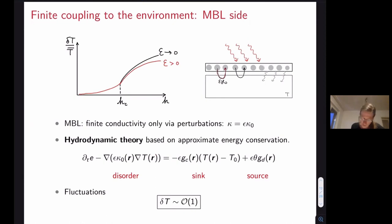To properly capture the MBL side, one would really have to take into account all conservation laws. But if we cheat a little bit and just say that, okay, in this case the conductivities that the system has are only due to the coupling to the environment and are thus proportional to the coupling strength to the environment, we simply at least see that epsilon cancels out of the problem in lowest order.